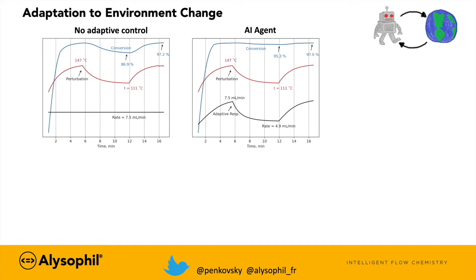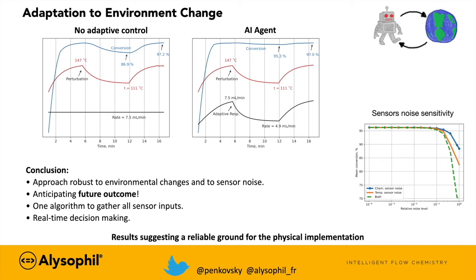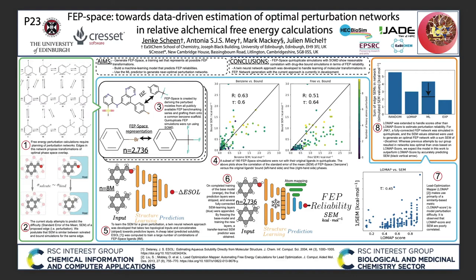We have also verified that the agent is extremely robust to sensor noise. We conclude that the approach is robust to environmental changes and to sensor noise. Interestingly, the agent learns to anticipate the future conversion outcome with respect to the residence time. We have a single algorithm to gather all sensor inputs to react in real-time. Our results suggest a reliable ground for the physical implementation.